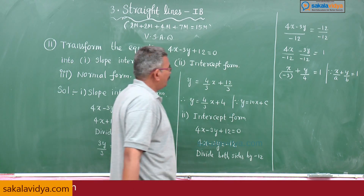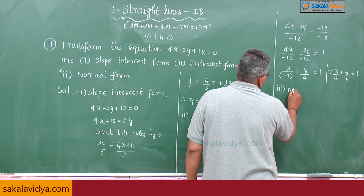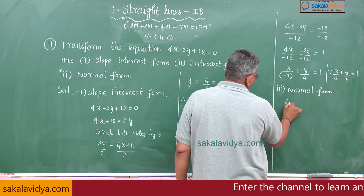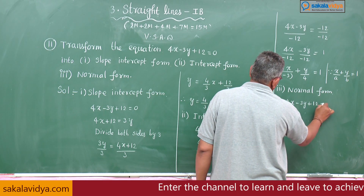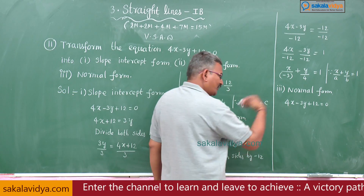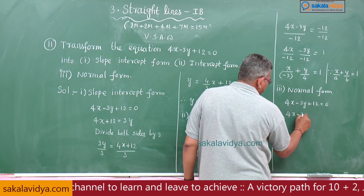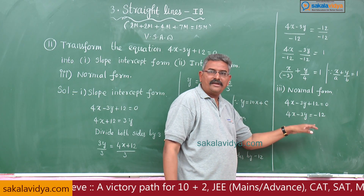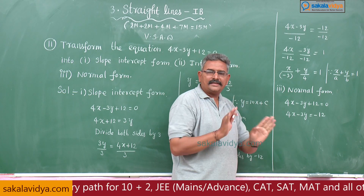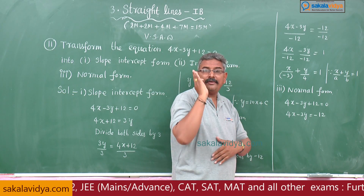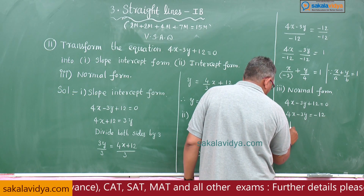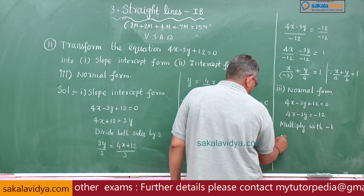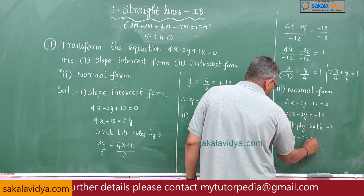Now let us move to the normal form — the third one. The given equation is 4x minus 3y plus 12 equals 0. Transfer 12 to the other side: 4x minus 3y equals minus 12. Be careful — the right hand side constant must be positive. If it is negative, multiply by minus 1. So we get minus 4x plus 3y equals 12.